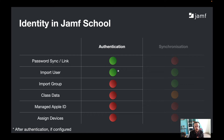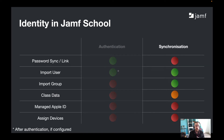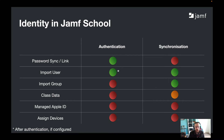Let's take a look at what that looks like in this table. With authentication, we get green lights on password sync and user import. With synchronisation, we don't get password sync, but we do import the user and have the group. There's an orange light when it comes to class data, because it's easy to convert a group into a class. What you'll start to see as we build this picture is that it's better to have both authentication and synchronisation configured in Jamf School.